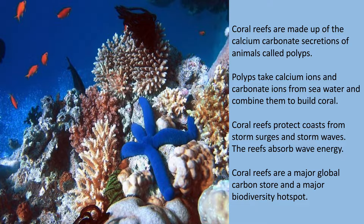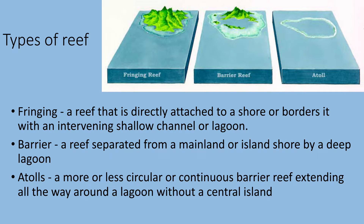Coral reefs are beautiful, amazing things, and also important for the carbon cycle. We talked about diffusion in the carbon cycle — where carbon dioxide diffuses into sea water and through a sequence of processes you end up with calcium carbonate, which is what seashells are made from. Calcium carbonate is also what coral is made from, so coral reefs are part of the carbon cycle.